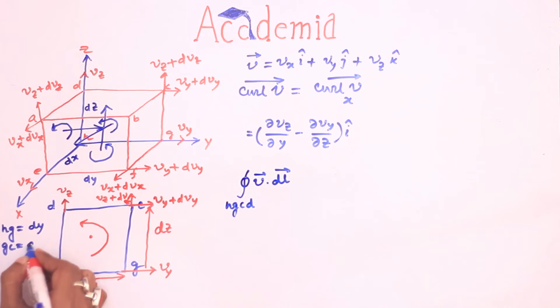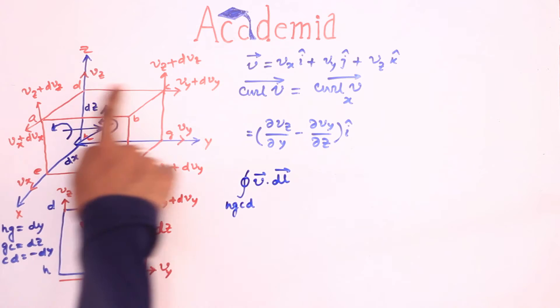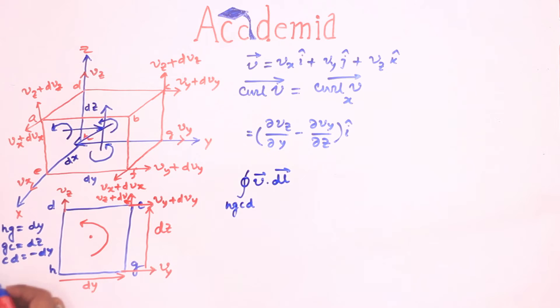cd is a negative dy since dc is positive dy and dh is a negative dz since hd is positive dz.